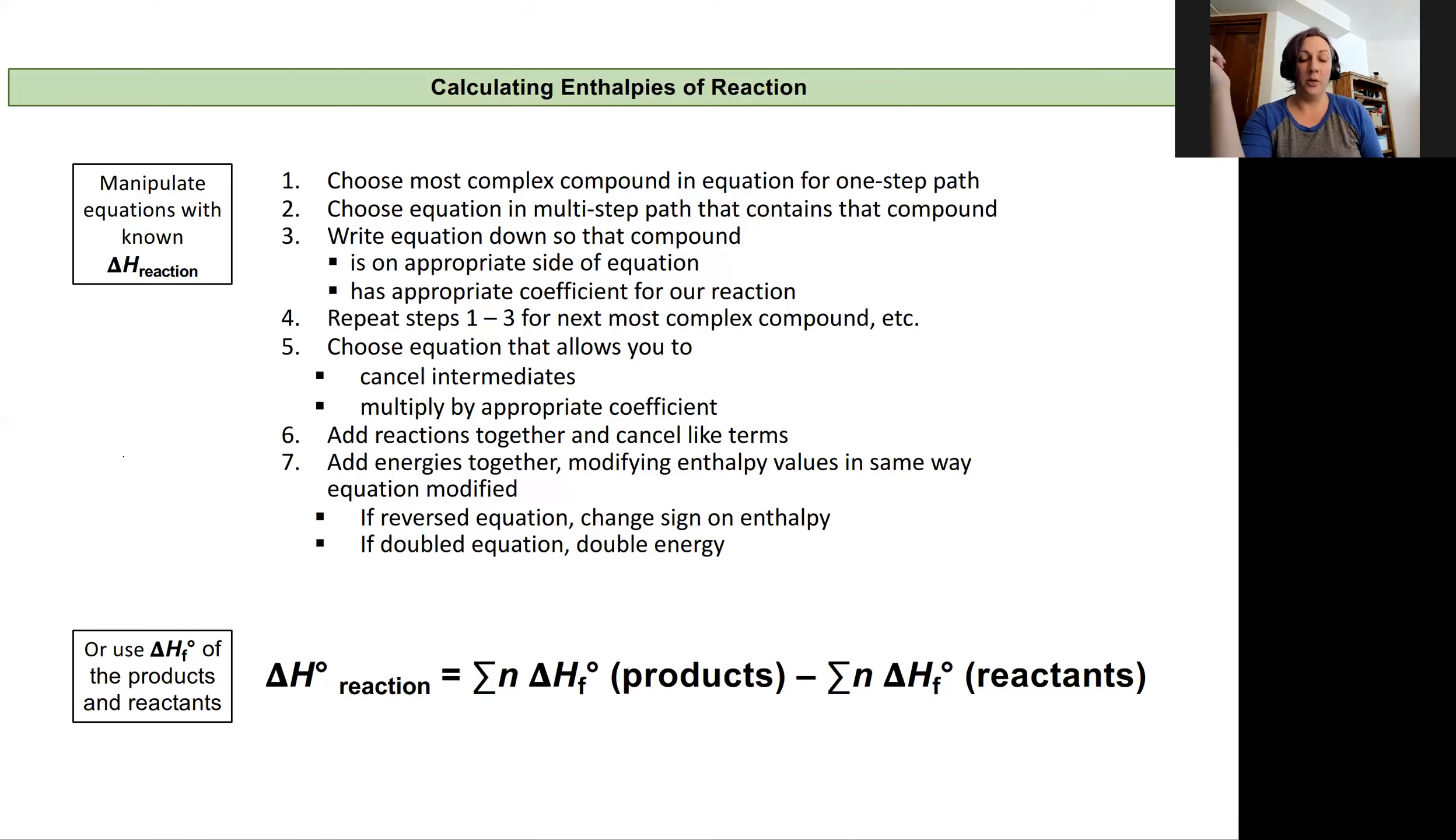The other way to calculate enthalpy is from standard enthalpies of formation. And so in this case, we take the reaction we're interested in, and we focus on each reactant and product. And we look up the formation enthalpy for that chemical. And we take the sum of all of those enthalpies of formation for the products.